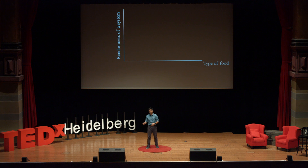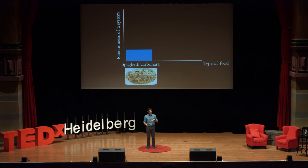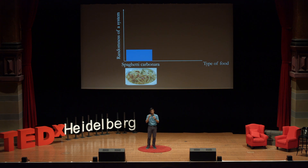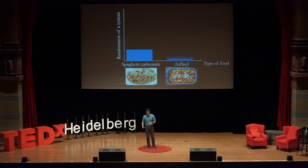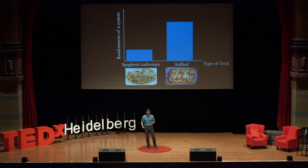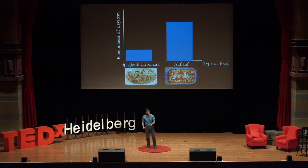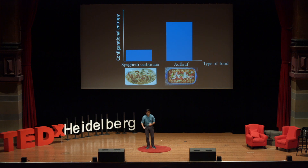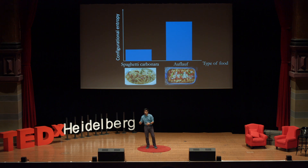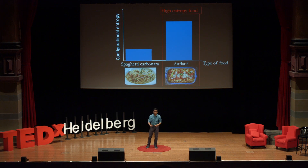What drives an Auflauf metal? If we plot the randomness of the system versus the type of food — in spaghetti carbonara, the randomness is really low. The probability of spaghetti sitting next to another spaghetti is pretty damn high. If you take your Auflauf, the randomness is pretty high because the probability of a carrot sitting next to another carrot is low. If you're studying thermodynamics, you would know that randomness — or increase of randomness — you can call it configurational entropy. So you can call your Auflauf a high-entropy food.